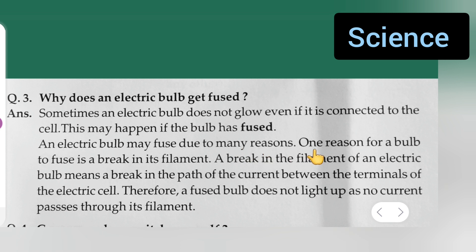One reason for a bulb to fuse is a break in its filament. A break in the filament of an electric bulb means a break in the path of the current between the terminal of the electric cell.